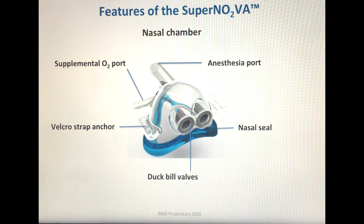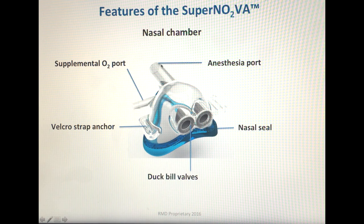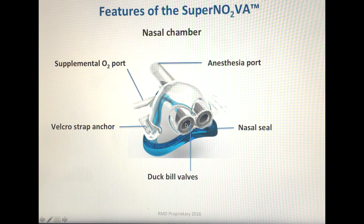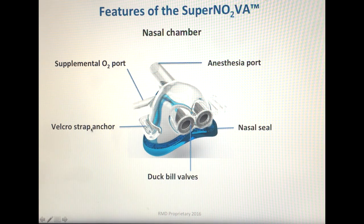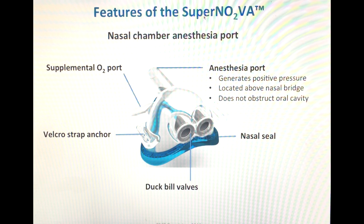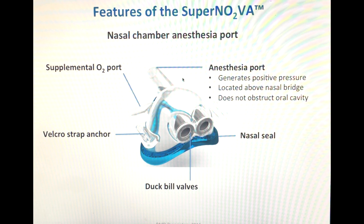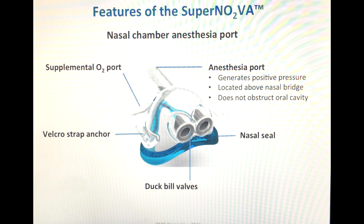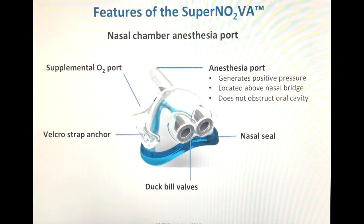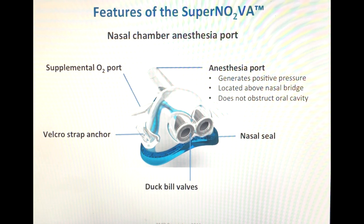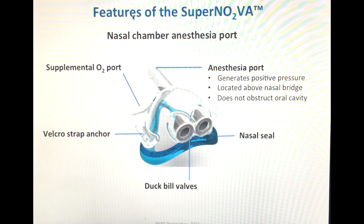Let's discuss the features of the Supernova, starting with the nasal chamber. Key features include the anesthesia port, the nasal seal, the duct bill valves, the Velcro strap, and the supplemental oxygen port. The first unique feature is the location of the Supernova's anesthesia port. On typical masks, the anesthesia port is located in the middle and extends vertically, which would obstruct the clinician's view during intubation. The Supernova's anesthesia port was specifically designed to be located above the nasal bridge, parallel with the face, allowing for continuous ventilation during laryngoscopy.